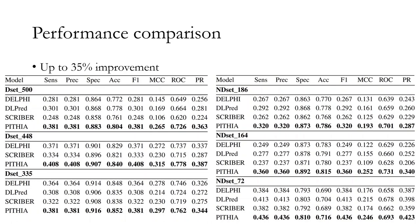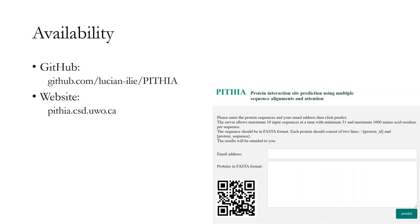Finally, let's talk about results. We compared our method with three state-of-the-art models: DLPRED, Scriber, and Delphi. We were able to outperform each and every one of these models on multiple metrics across all the datasets. We were able to improve the performance of the model with respect to area under precision-recall by up to 35%. The source code of Pythia and the datasets used in this study are available on our GitHub page. We also created a web server that can be used by anyone. Thank you very much.